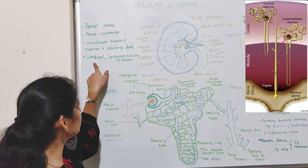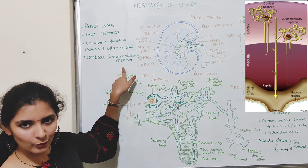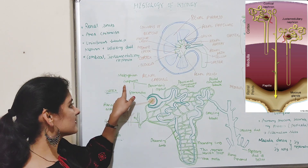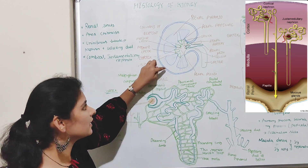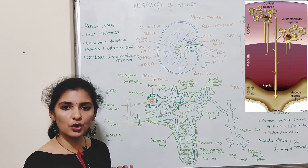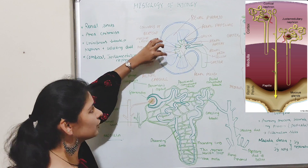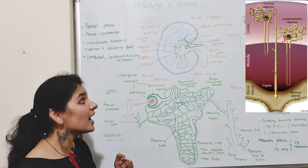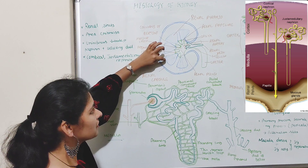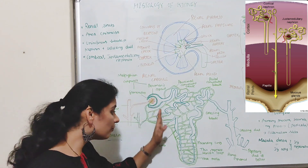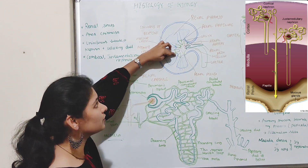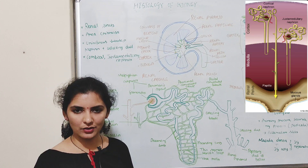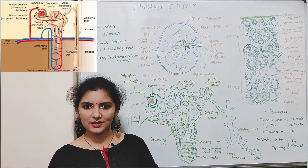Based on distribution and morphology, nephrons are of two types: cortical nephrons and juxtamedullary nephrons. In cortical nephrons, the Malpighian corpuscles are present very close to the renal capsule, and these nephrons have very short renal tubules extending only to the upper part of the medulla. In juxtamedullary nephrons, the corpuscles are at the corticomedullary junction and they have very long renal tubules extending deep into the medulla.